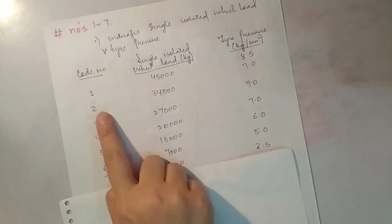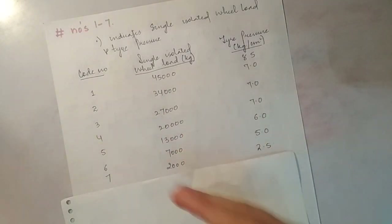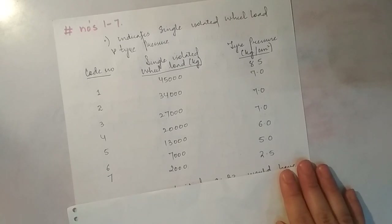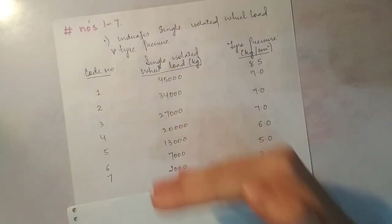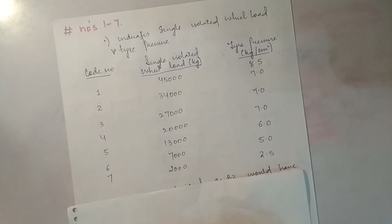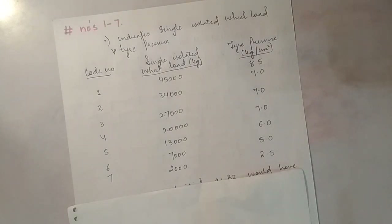Code 2 का single isolated wheel load 34,000 kg है और tire pressure 7.0 kg per cm² है। बाकी सारा आप pause करके खुद देख लीजिए। इसमें भी trend यही है: जब code 1 to code 7 जाते हैं, single isolated wheel load कम होती जाती है और tire pressure भी कम होता जाता है। मतलब type 1, 2, 3 — जितना number कम, उतना enhanced airport, उतना ज़्यादा wheel load और tire pressure बर्दाश्त होगा।